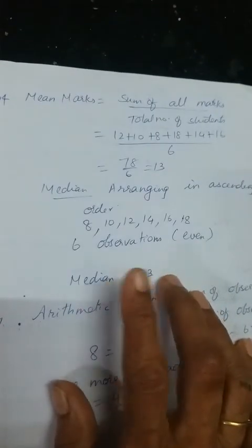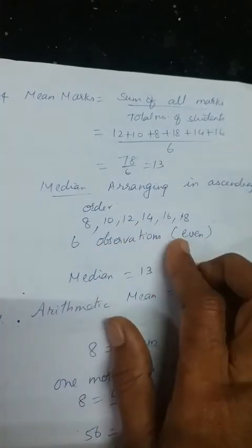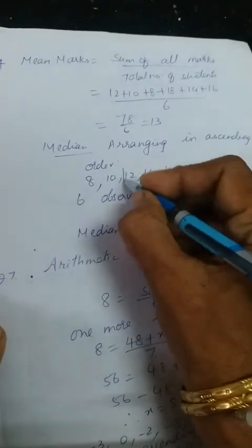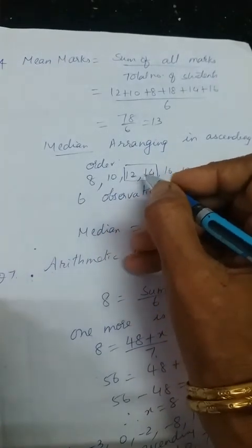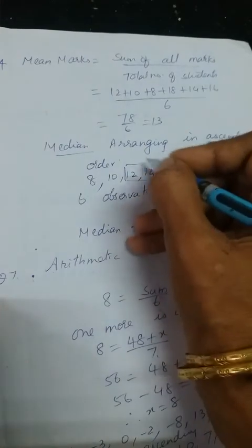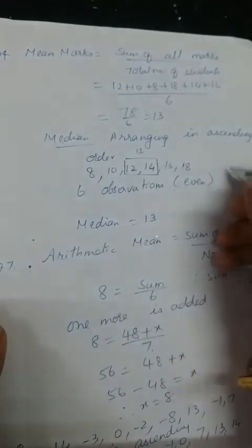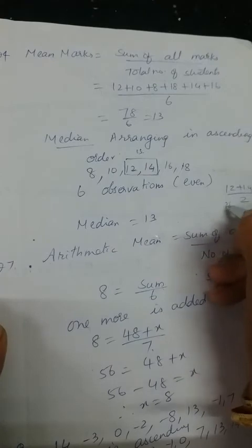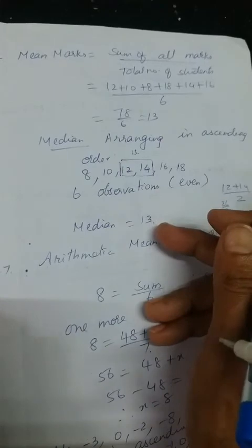For median, don't forget to arrange it first. After arranging, you have 6 observations — even number — so 2 middle values: 12 and 14. The median = (12 + 14) / 2 = 26 / 2 = 13. So the median is 13.